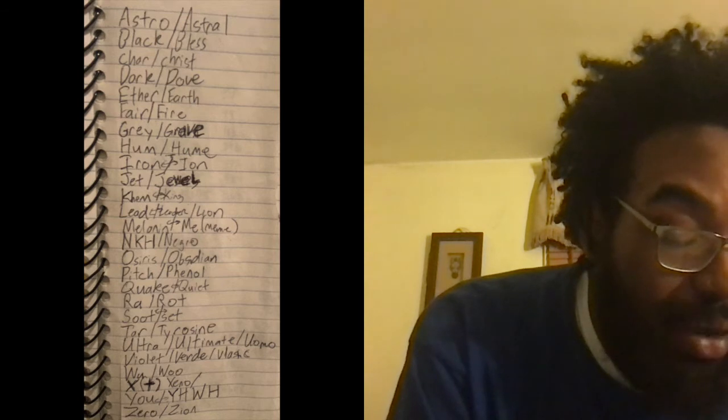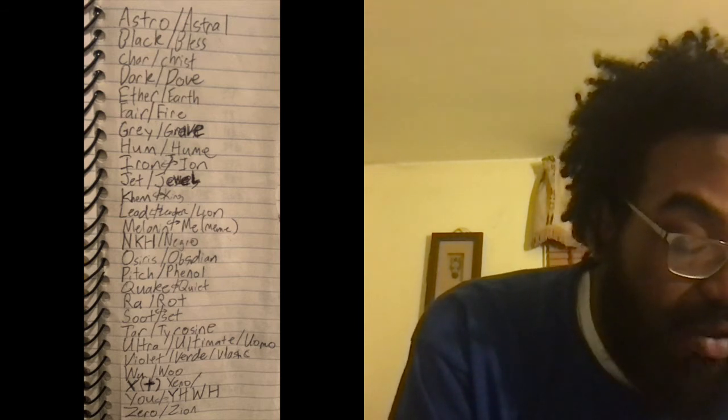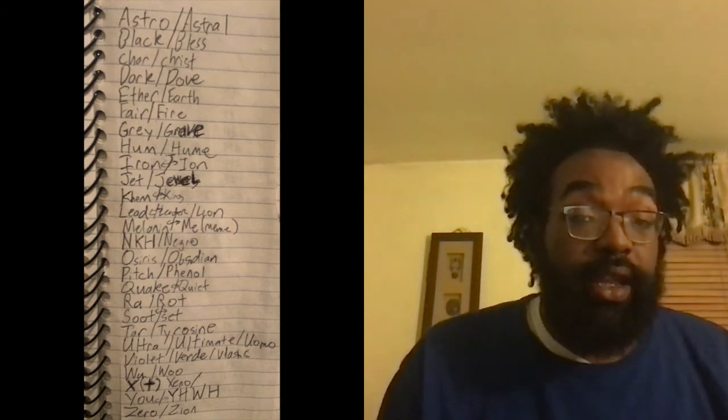The Astro Black goes as follows: A — astro or astral. B — black or bless. C — char or christ. D — dark or dove. E — ether or earth. F — fair or fire. G — gray or grave. H — hum. I — iron or ion. J — jet or jewel. K — chem or king. L — leader or lion. M — melanin or meme. N — negro. O — obsidian. P — phenol. Q — quake or quiet. R — raw or rot. S — soot or set. T — tar or tyrosine. U — ultra or ultimate. V — violet or verde. W — woo. X — X. Y — you and the Tetragram. Z — zero, Zion.